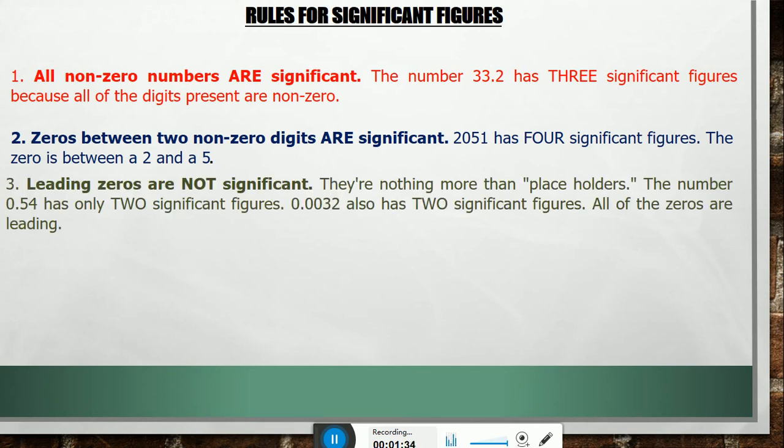Rule 3: Leading zeros are not significant. They're nothing more than placeholders. The number 0.54 has only two significant figures. 0.0032 also has two significant figures. All of the zeros are leading.